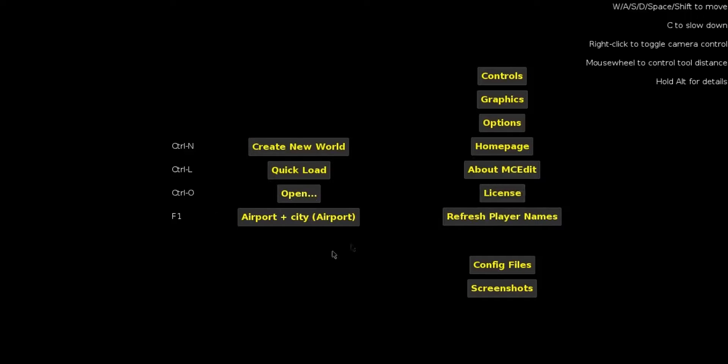If you don't have any saves here, just click open and then you're gonna be instantly dropped to the save files. There you select a folder and just click on level.dat.